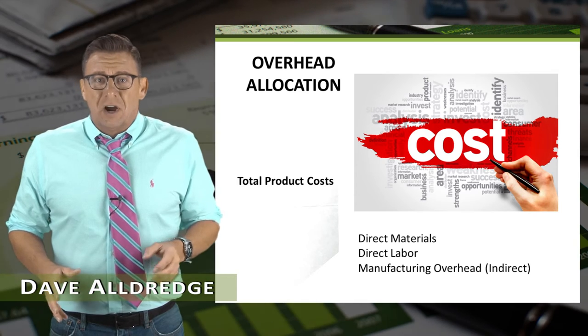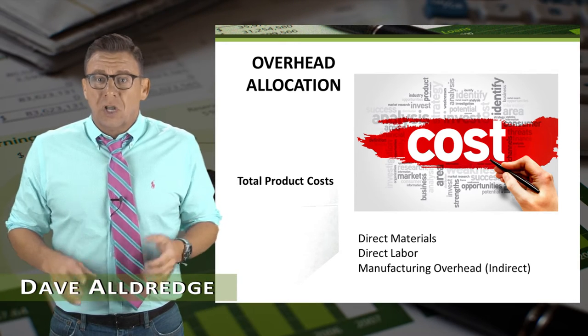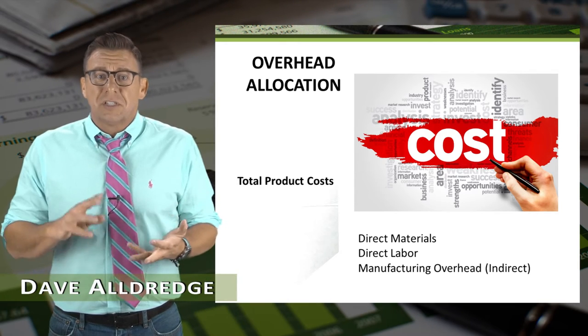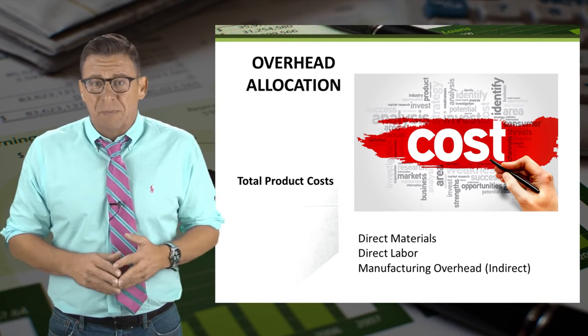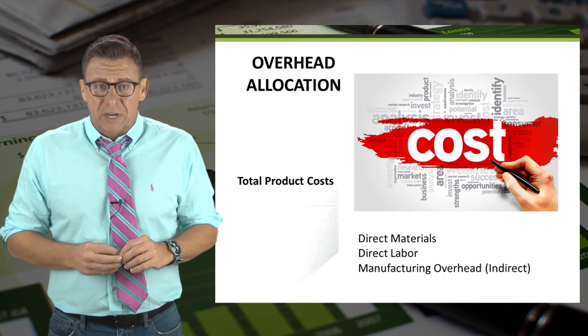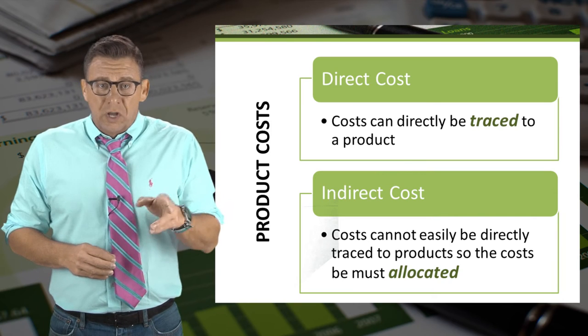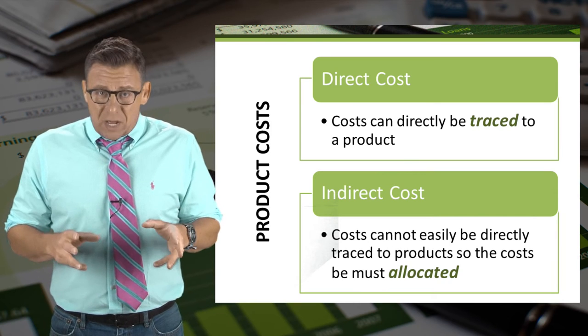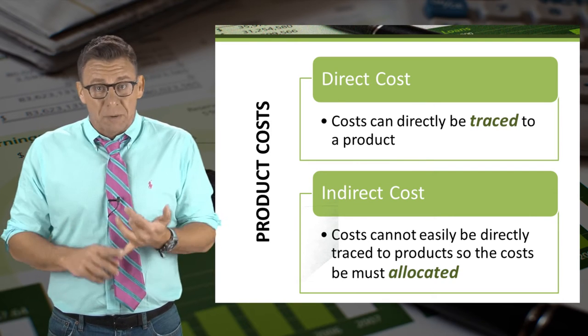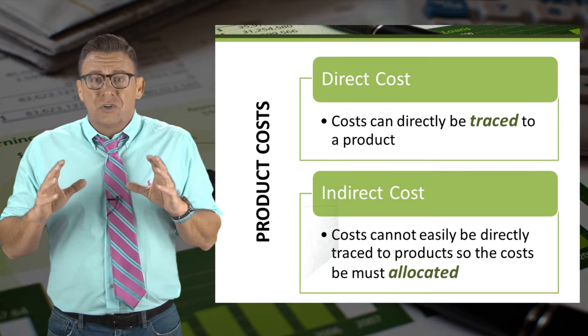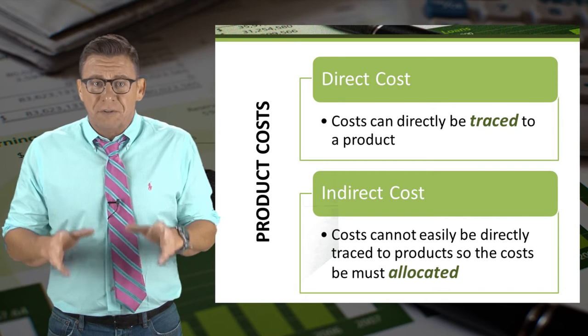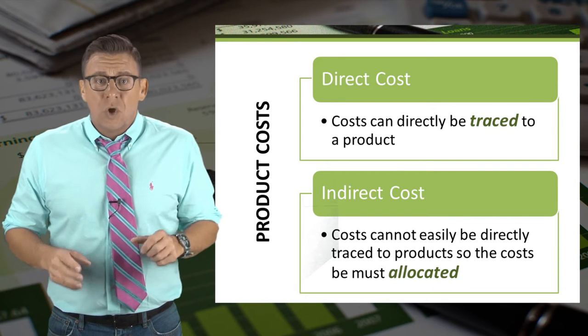Product costs are the total of direct materials, direct labor, and indirect manufacturing overhead. Recall that direct costs, like direct materials and direct labor, are traced to the finished product.